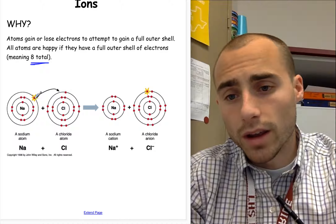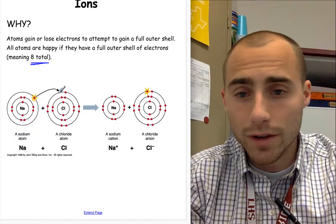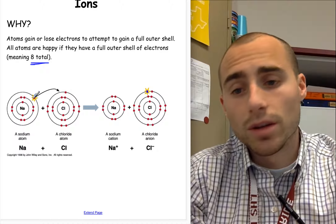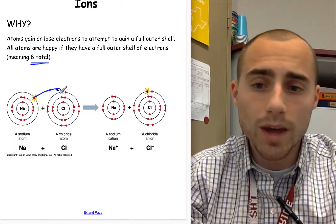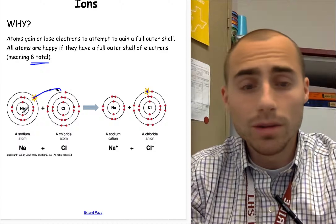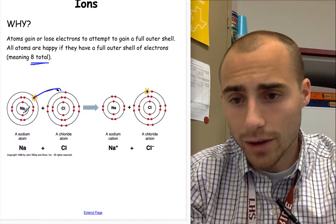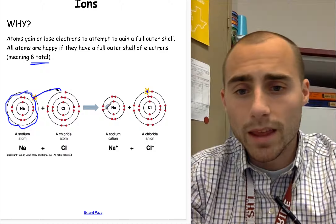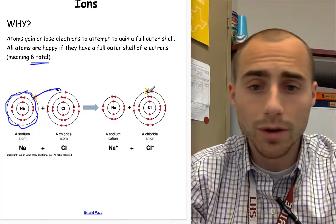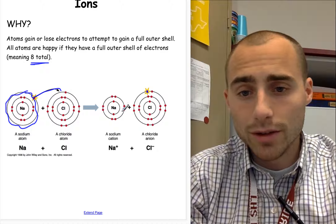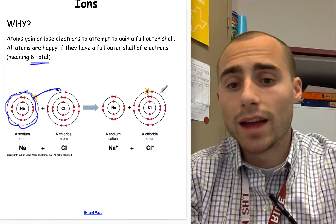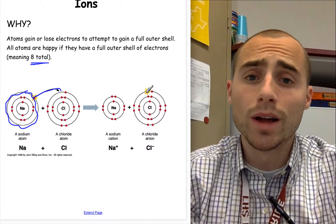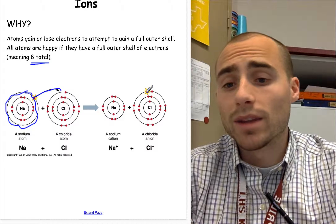Chlorine would like to gain an electron because it has seven valence electrons, and if it gains one it will have eight. It can gain one by something like sodium giving away an electron — sodium will give one away to chlorine. Chlorine is happy because it has eight, and sodium, as soon as it gives away that electron, its outer energy level is empty. You can erase that outer energy level, and now sodium has eight on its second energy level, which is now its outer one, and chlorine has eight on its final energy level. Everybody's happy with eight valence electrons.